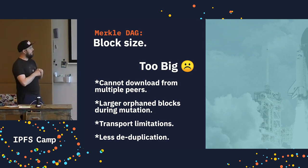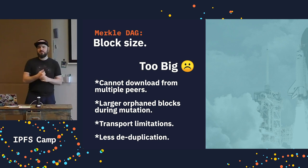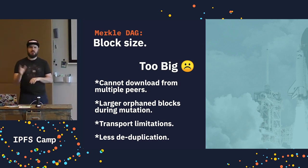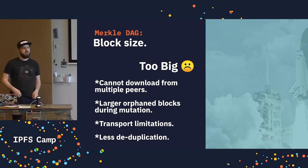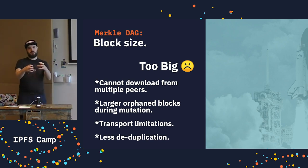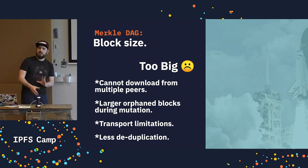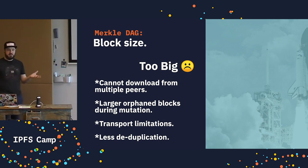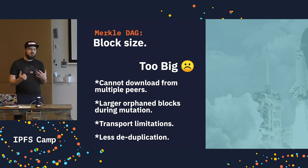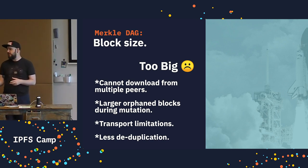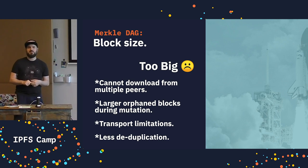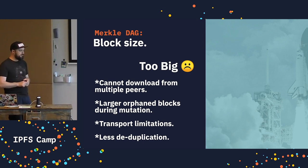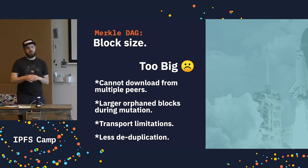When you have really big blocks, you end up with really big orphan blocks that create a bigger garbage collection problem. Different transports may have different limitations — BitSwap has issues with blocks over 2 megabytes right now. You also end up with a lot less deduplication the bigger you make the blocks, because the only method for deduplication is the hash itself. If data particles that would be the same aren't links but are just embedded in blocks, they won't ever get deduplicated.